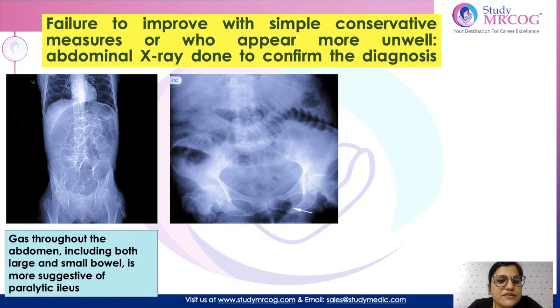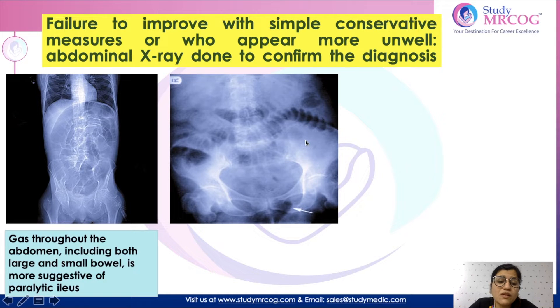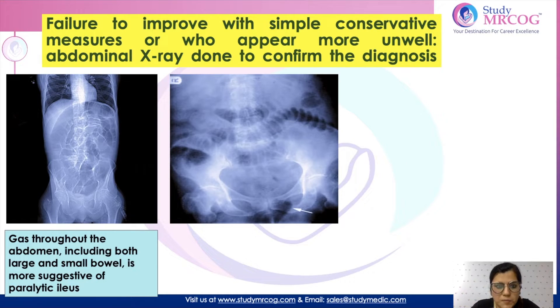This is the second differential diagnosis, where you see gas only in the small bowel and the large bowel loops are not distended. This pattern occurs in mechanical obstruction.